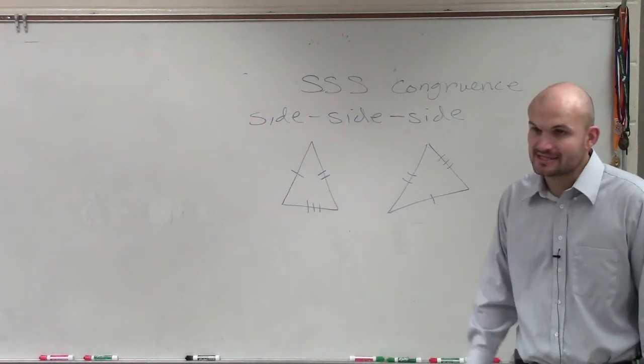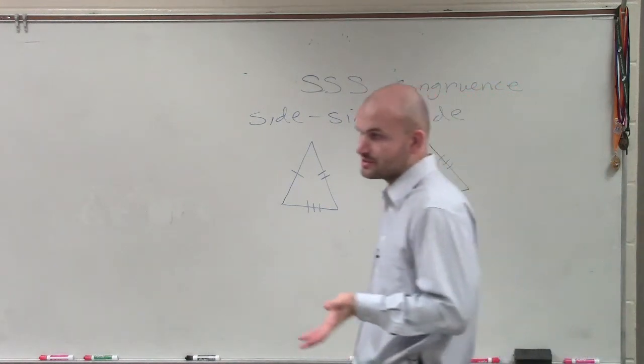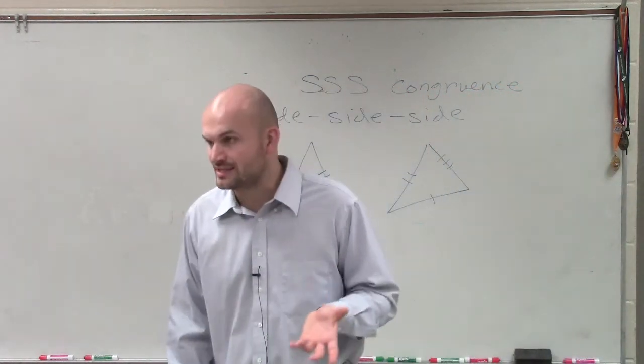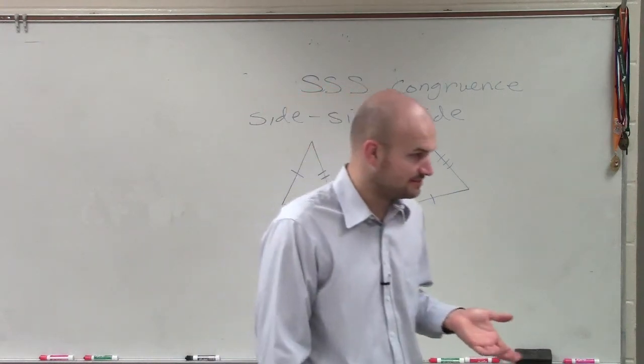So that is your side, side, side. When you have three equal side measures for both triangles, they are going to be congruent. Equal in measure and equal in lengths and value.